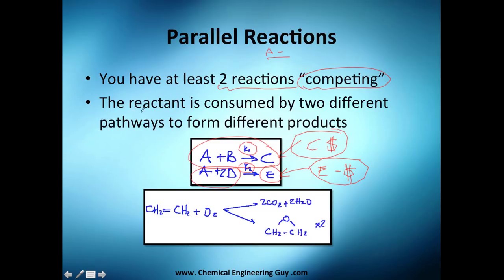The reactant is being consumed by two different pathways - the first reaction and the second reaction. An example is ethylene with oxygen. You could either produce this molecule or two molecules which has industrial value, or CO2 and H2O, which you probably know by combustion.